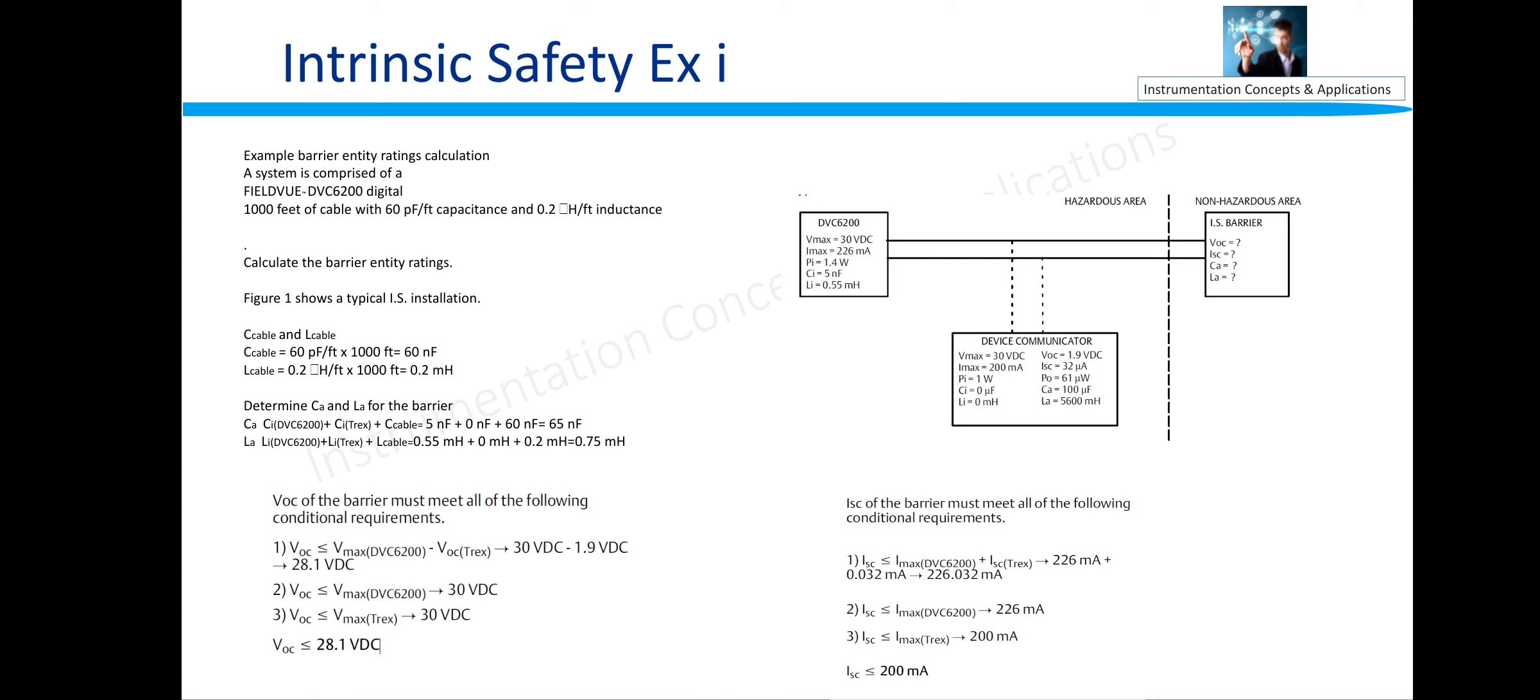The intrinsically safety barrier short circuit current of the barrier must meet all the following conditions. You can see here ISC is less than Imax of DVC plus ISC Trex, that is 226 plus this, this becomes 226. ISC should be less than this. So ISC is 200 milliampere. In this way we are going to select the intrinsically safe barrier, and by this method we are going to achieve and restrict the hazardous energy which is going into the field in the safety level.